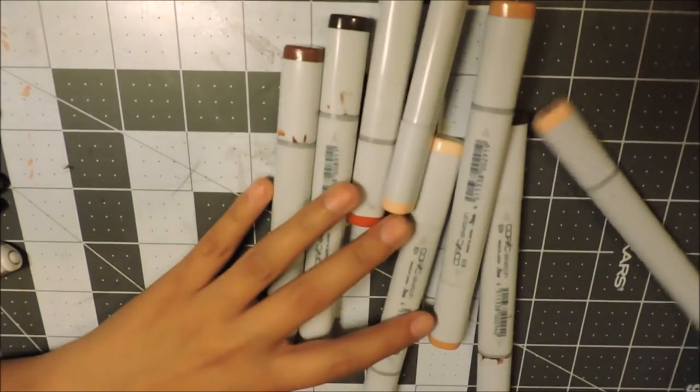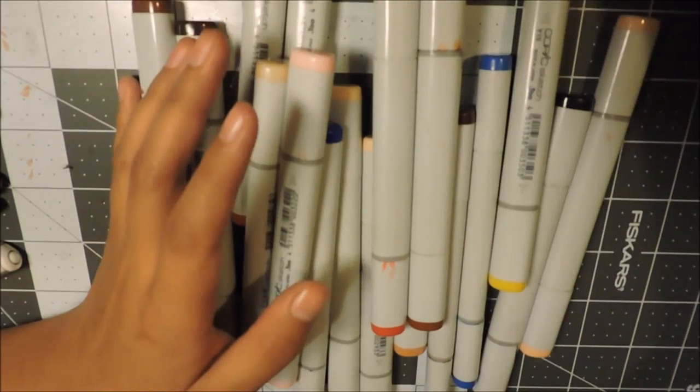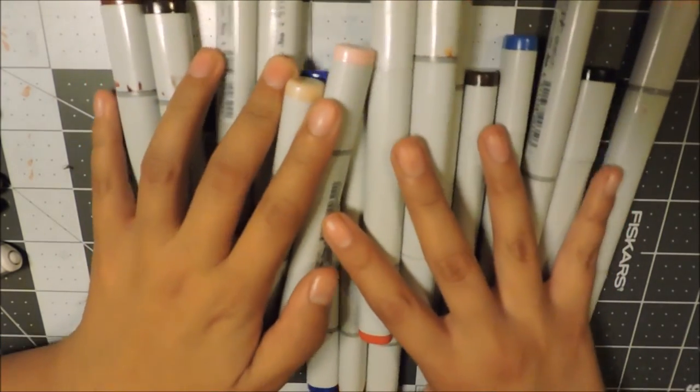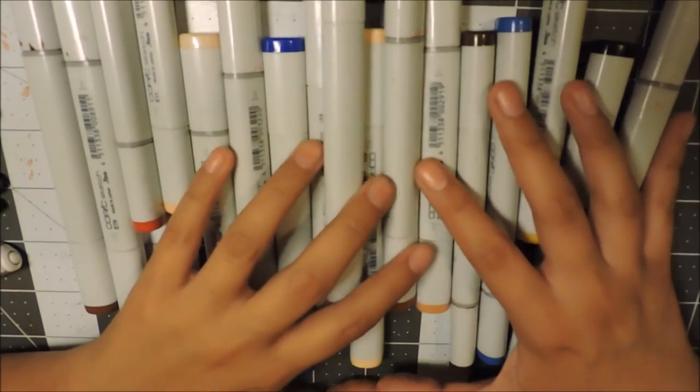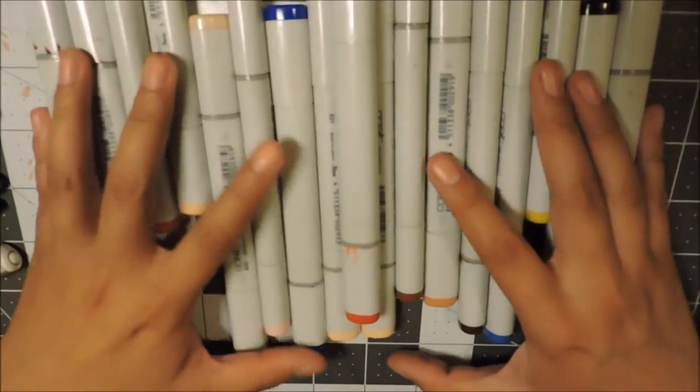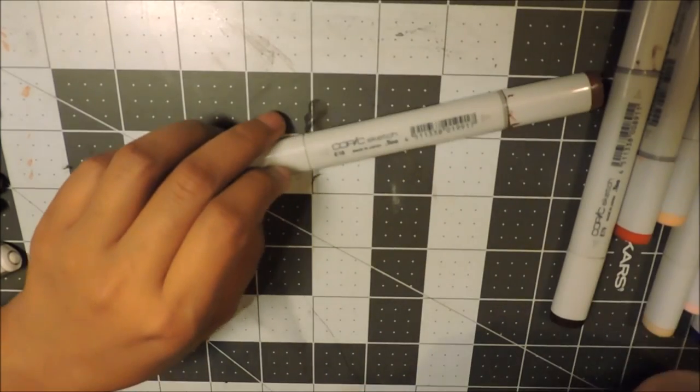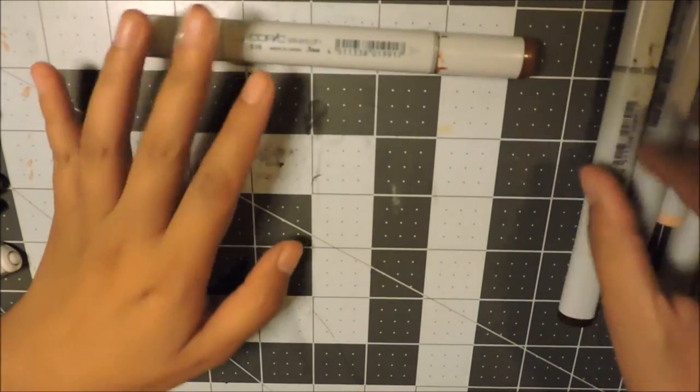And finally all of these Copic Sketch markers that I own. I believe there's actually a couple more that are not in here just because these are the colors I tend to reach for. I'm going to have all the color names and the numbers in the description. Here I have E18 which is a brown.